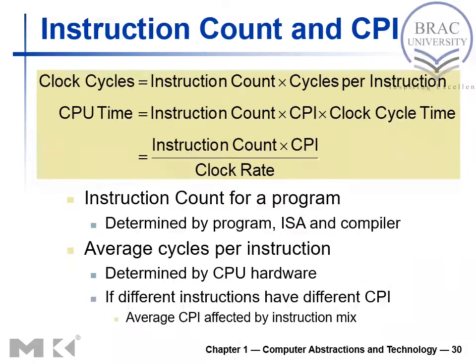Let's define instruction count and CPI. Clock cycles equal instruction count — that is, the number of instructions in a program — multiplied by cycles per instruction, which is how many cycles each instruction requires. CPU time equals instruction count times clock cycles per instruction times clock cycle time. Simplified, CPU time equals instruction count times CPI divided by clock rate.